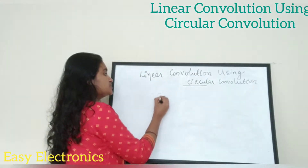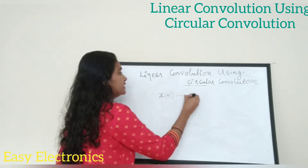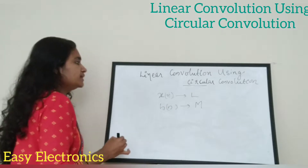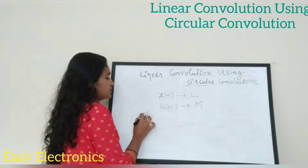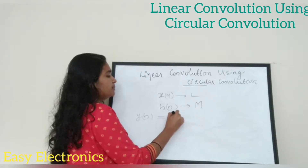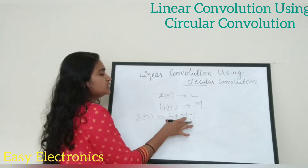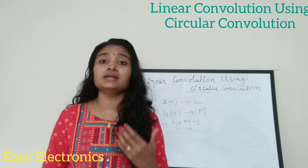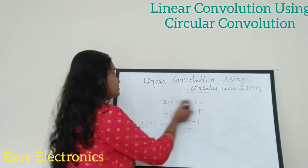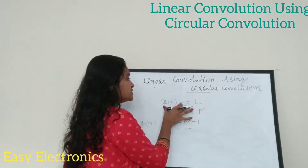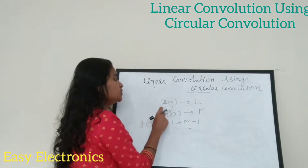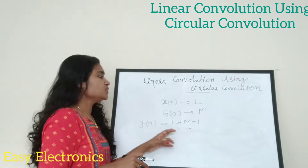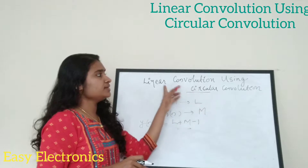Here I am taking two sequences: x of n, which has length L, and my second sequence h of n, which has length m. Let the circular convolution result be y of n. The length of y of n will be equal to L plus m minus 1. The first and foremost criteria for performing circular convolution is that the lengths of the two sequences must be equal. In order to find the linear convolution, the result has length equal to L plus m minus 1.